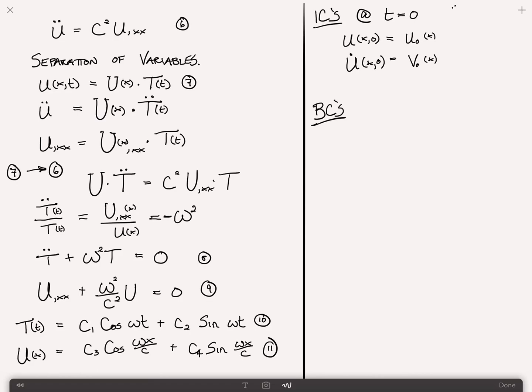For the boundary conditions, there are numerous different boundary conditions depending on the problem. Two of the most common ones are either the end is free or the end is fixed. If the end is fixed, as in our diagram, at x equals 0, u of 0 comma t equals 0. However, at x equals l, we have a free surface. There's no applied force on the surface, meaning there's no stress. So u comma x at l comma t equals 0.